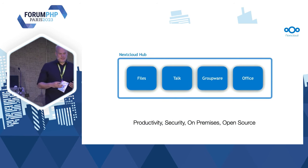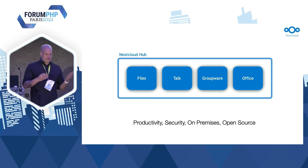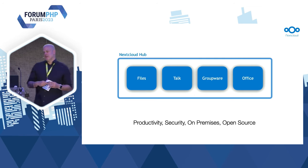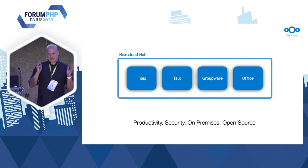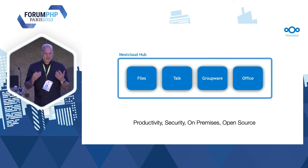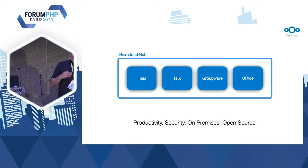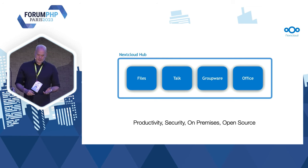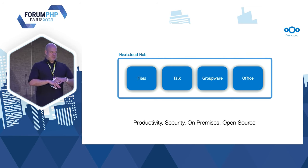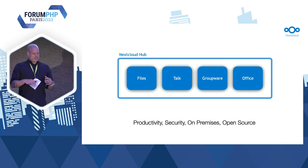Nextcloud is divided into different pieces. We have Files for file sync and share, Talk for chat and video conferencing, Groupware for mail, calendar and contacts, and Office for office documents. Unlike Zoom, Slack, Google, Microsoft, and Dropbox, we are not SaaS. We provide completely open source software developed in PHP that you can put on any machine — a Raspberry Pi at home or a big cluster — giving you your own local Microsoft 365 and completely open source Google Workspace.